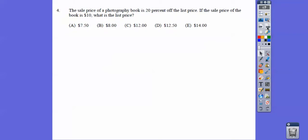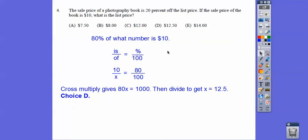The sale price of a photography book is 20% off on the list price, so that means it's going to be 80%. So if the sale price of the book is $10, then what is the list price? So 80% of what number is $10? If you can get it in this form, then make a proportion. A proportion is a fraction equals a fraction. Is over of equals percent over 100. So we put the 80 over 100, and so is $10, and so this must be x. Go ahead and cross multiply, and you get choice D.